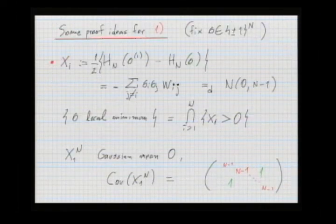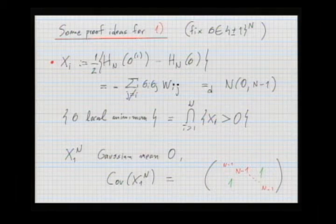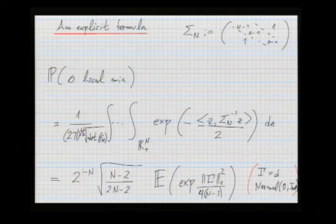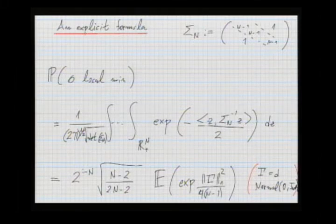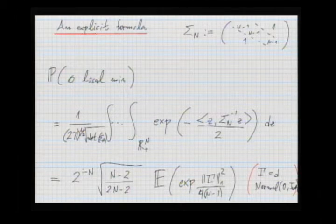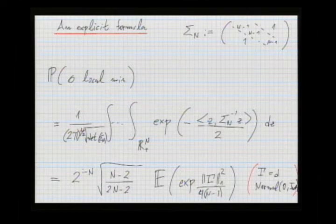Since the covariance structure is simple, we can try to compute the probability that sigma is a local minimum explicitly. The event is that all X_i are positive under a high-dimensional Gaussian measure with a rank-one perturbation covariance. By doing changes of variables, you get an explicit formula: if Z is a standard normal random vector in R^N with i.i.d. coordinates, the probability of being a local minimum reduces to a specific expectation. To get the expected number, multiply 2^N by this probability.